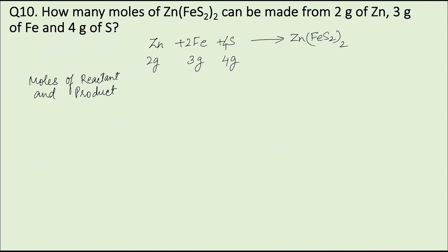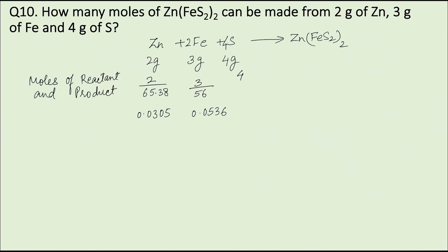Moles of zinc = weight of zinc divided by its atomic weight = 2 / 65.38 = 0.0305 moles. Moles of iron = 3 g / 56 = 0.0536 moles. Moles of sulfur = 4 g / 32 = 0.125 moles.